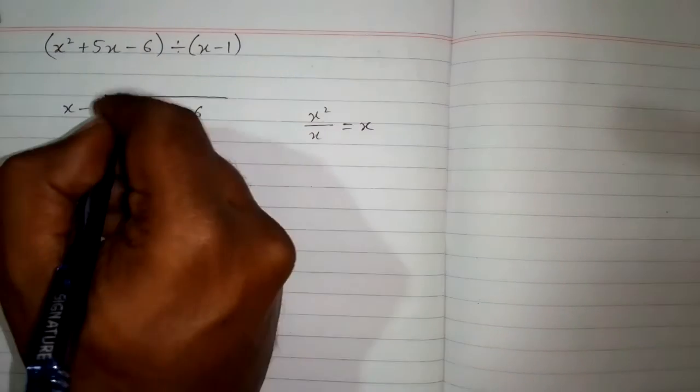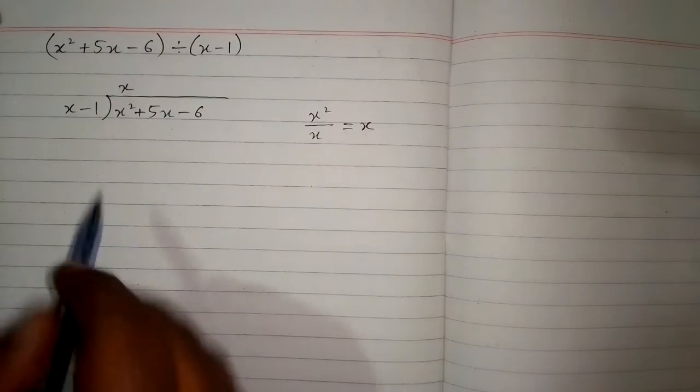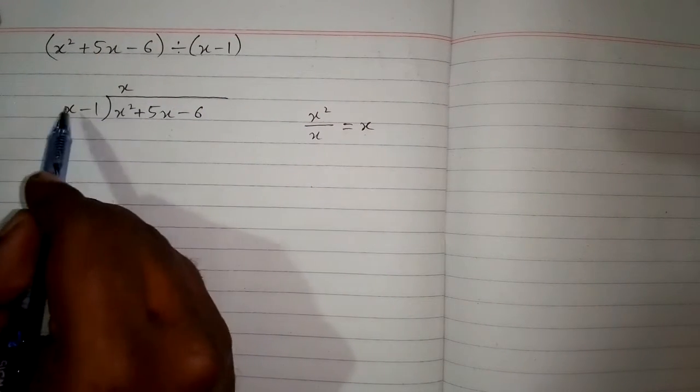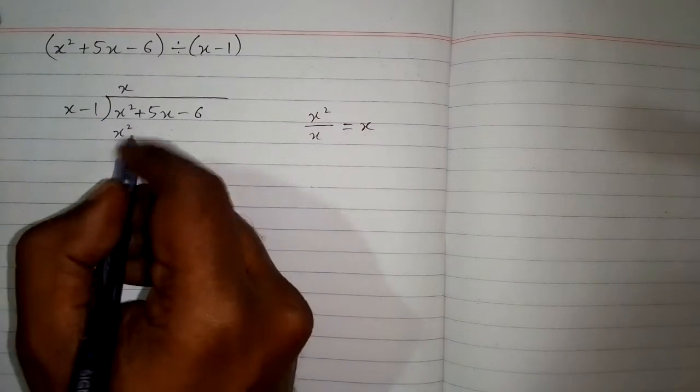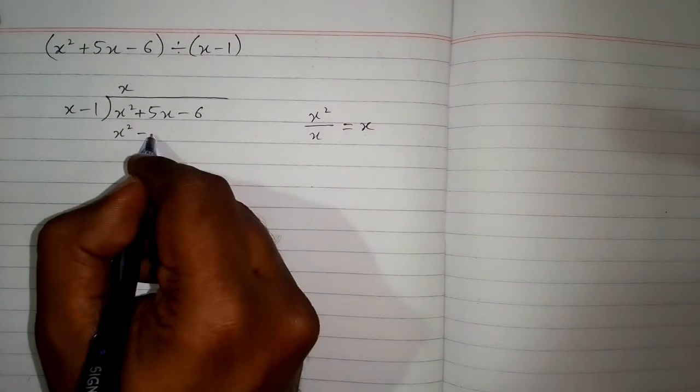So we will write this x over here and then multiply this divisor by x. So x times x is x squared and x times minus 1 is minus x.